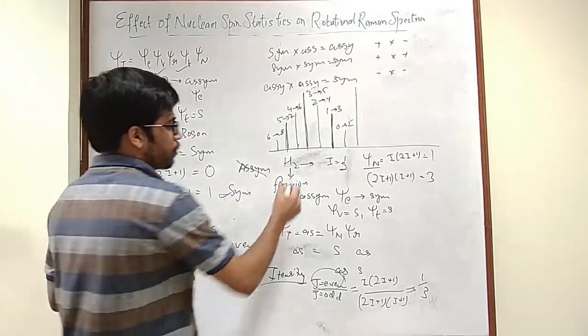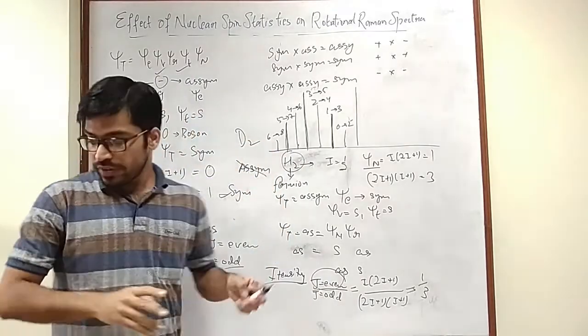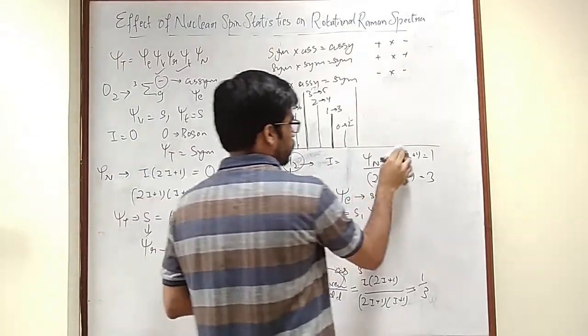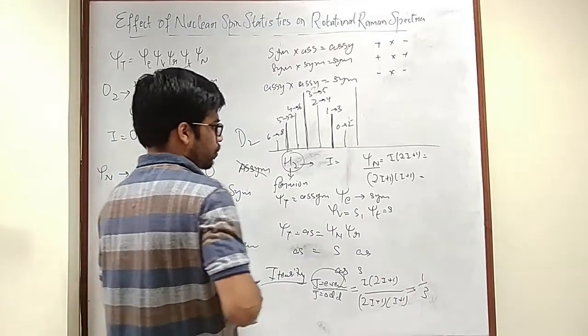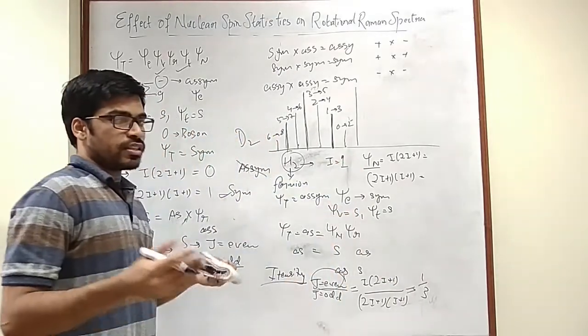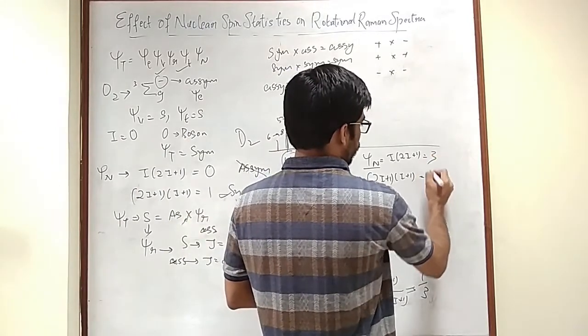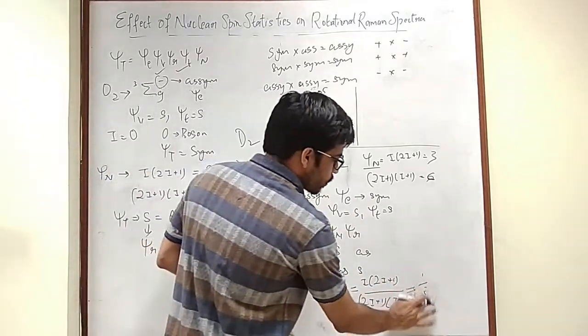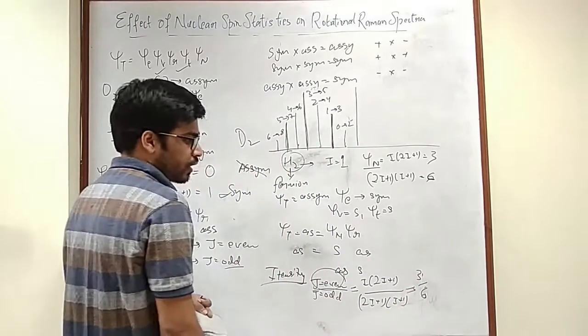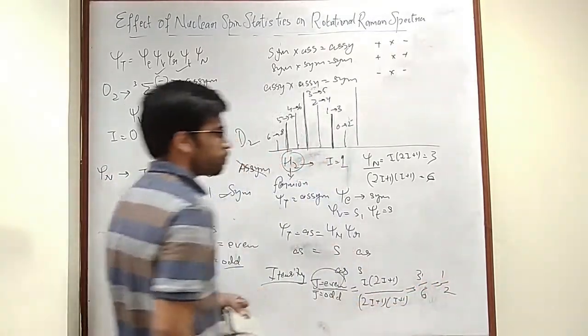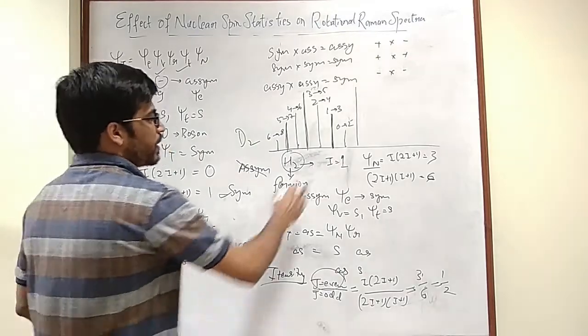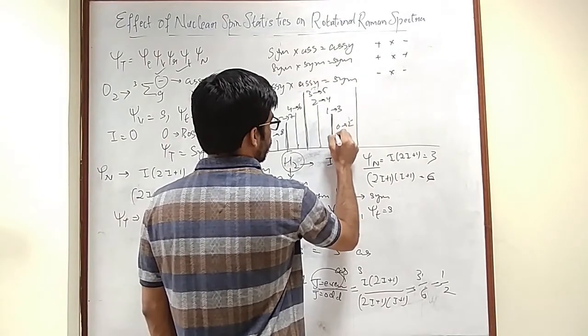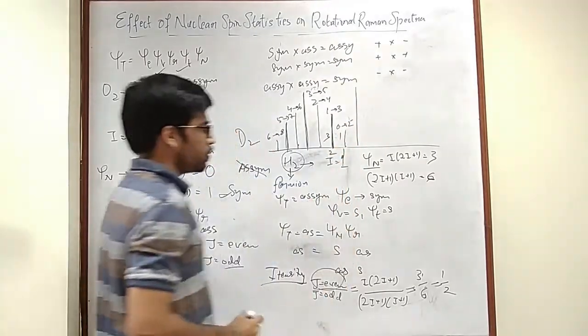Now let's say instead of H2, I have D2. The difference with D2 is that the nuclear spin is now 1. So that would mean this is your 3 and this is your 6. Everything is going to remain the same. The only difference is you will get 3 by 6 here. That would mean this is 1 by 2, right? So now the peak intensities are going to be 1 is to 2. This was suppose initially 1 is to 3. This is going to be 1 is to 2 now.